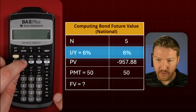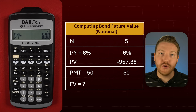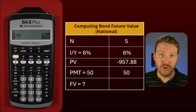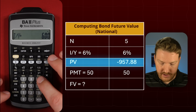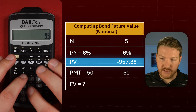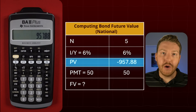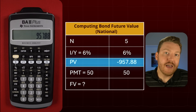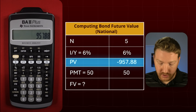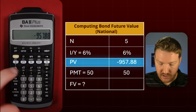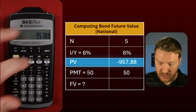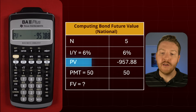Then let's look at the market price of this bond right now and observe that the current price is $957.88. But because we're trying to buy the bond, that would be a negative cash outflow initially. So let's hit this to make it negative, and then hit present value, or PV, to lock that in.